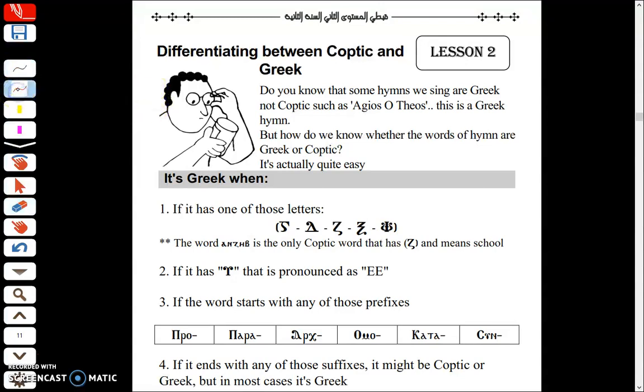The reason this is usually helpful is because of some pronunciation for some words. Words like this one that has the letter K could have a different pronunciation depending whether the word is Greek or Coptic.